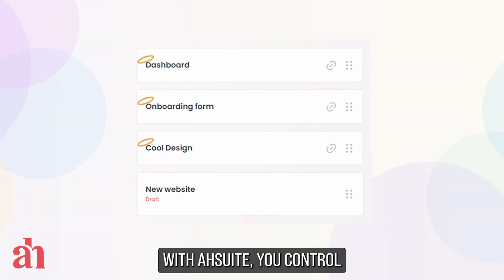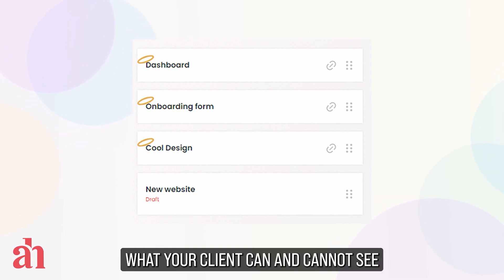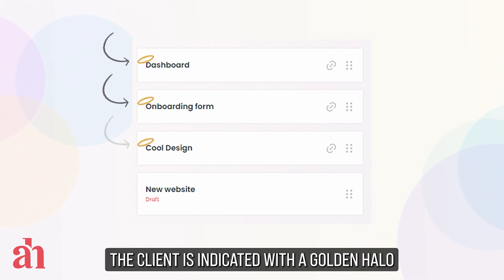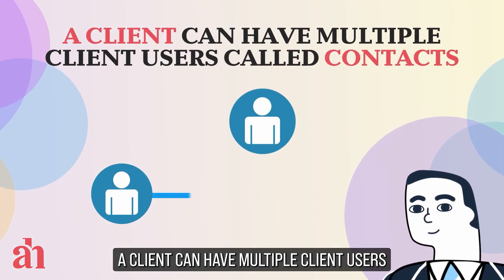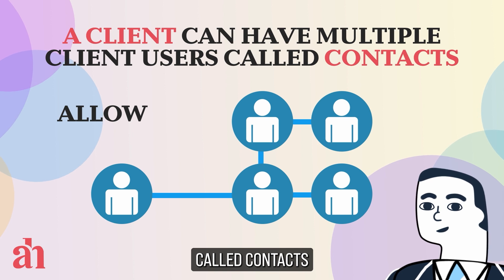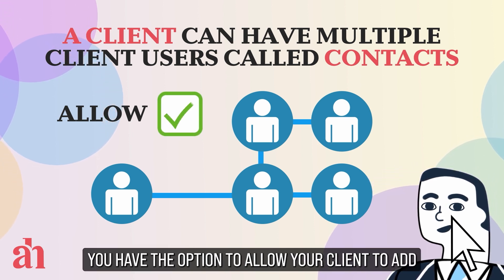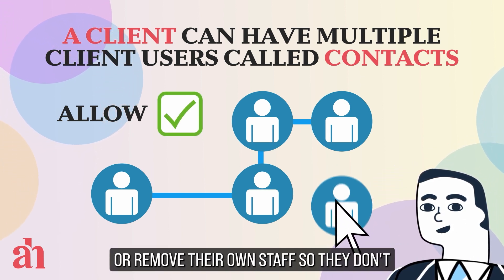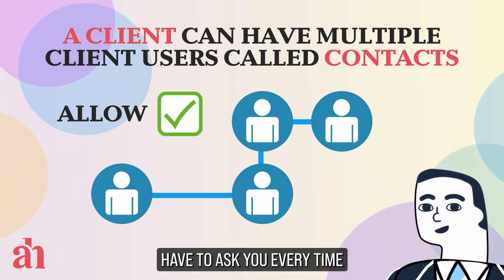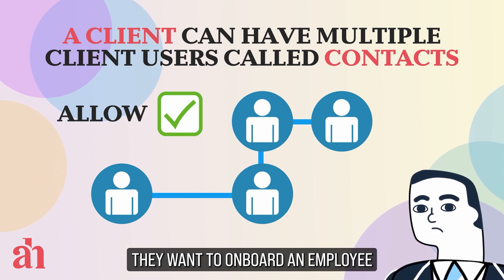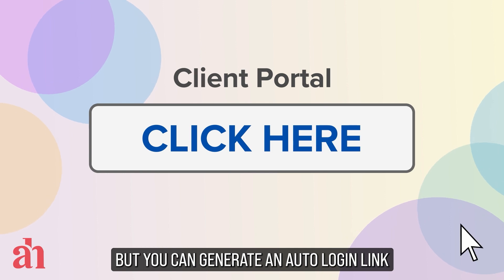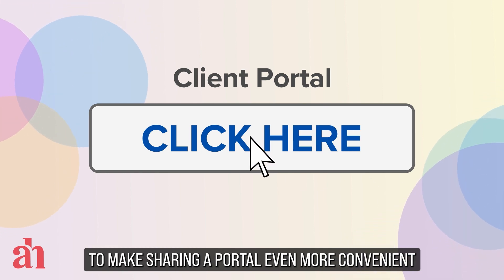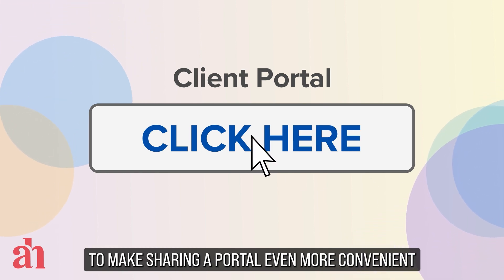With AusSuite, you control what your client can and cannot see. Anything visible to the client is indicated with a golden halo to remind you to be on your best behavior. A client can have multiple client users called contacts, and you have the option to allow your client to add or remove their own staff so they don't have to ask you every time they want to onboard an employee. Client portals are password protected, but you can generate an auto-login link to make sharing a portal even more convenient.